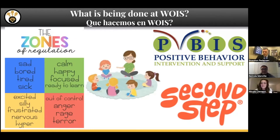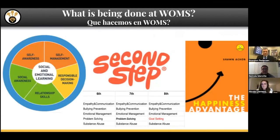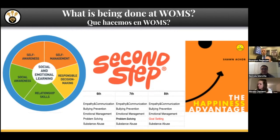At the middle school, we do have Second Step, but we also wanted to marry in a couple other items. We work with Stevenson High School, and they've incorporated a circular picture called the Castle Wheel. We also wanted to finish everything off with a book by Sean Achor called The Happiness Advantage, which is about building a more positive mindset. When we looked at the Second Step curriculum, we see a lot of similarity across sixth, seventh, and eighth grade — the first unit is empathy and communication, which maps to relationship skills and social awareness on the Castle Wheel.